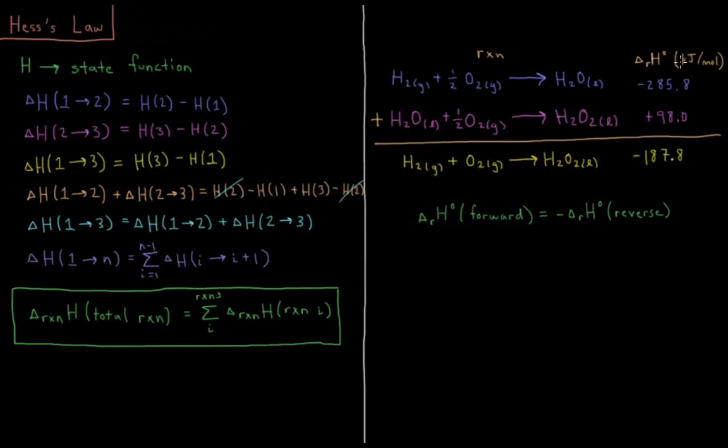Note that with enthalpy being a state function, the enthalpy going from 1 to 2 is equal to the negative of the enthalpy change going from 2 to 1, because those two processes have to add up to 0. This implies that the enthalpy change of a forward reaction is equal to the negative enthalpy change of a reverse reaction. We'll also use that in future videos for calculating the enthalpy of some complex process.